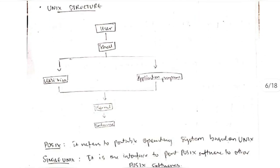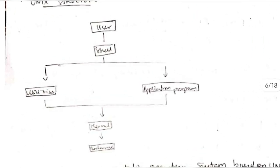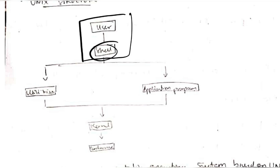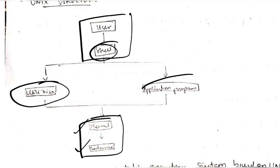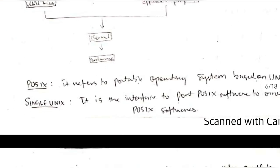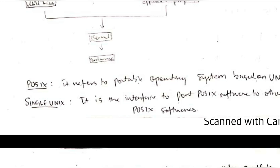What is the Unix structure? Basically we have the user part here which is interacting with the shell, and we have the computer part which is kernel and hardware. In between we have utilities and application programs which you can access for more efficient use of the kernel. We also have two types: POSIX and Single Unix. POSIX is nothing but the portable operating system, and Single Unix is an interface for POSIX.